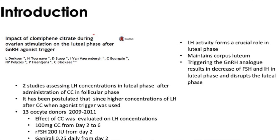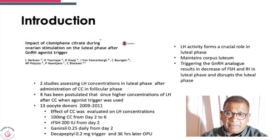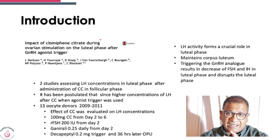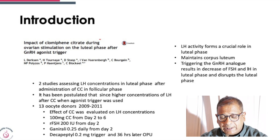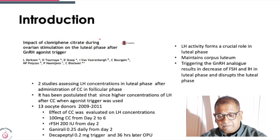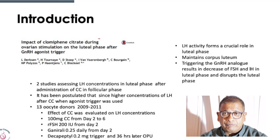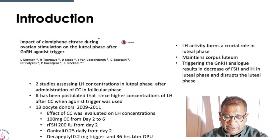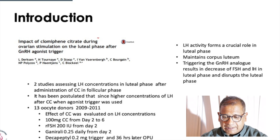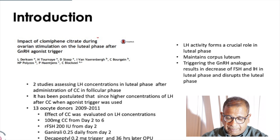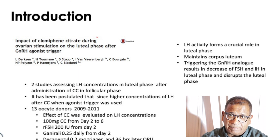So it was postulated that probably if you were to give clomiphene in the follicular phase, you would create a high amount of LH, and that may have an impact on the luteal phase, thus giving a better luteal phase. So 13 oocyte donors were taken and the effect of clomiphene on LH concentration was studied: 100 mg of clomiphene from day 2 to day 6, recombinant FSH from day 2 onwards, Ganirelix antagonist started daily, and Decapeptyl 0.2 mg as trigger, with ovum pickup 36 hours later.